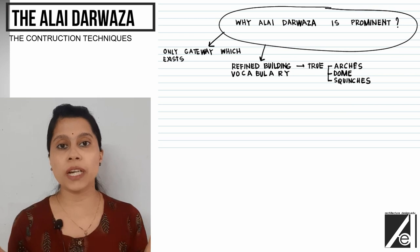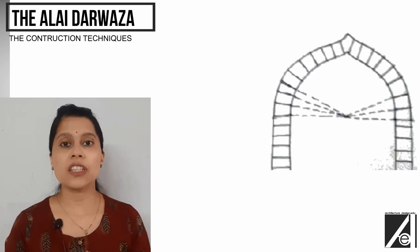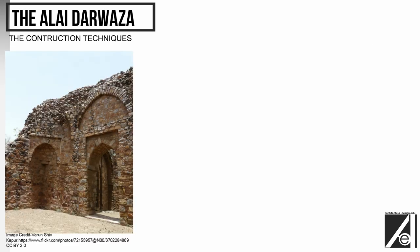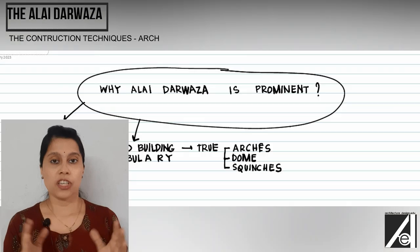A true arch is an arch with radiating voussoirs. The use of the true arch was first seen prominently in Balban's tomb, where the Islamic pointed arch could be seen for the first time using the true arch technique. This can be observed in a very refined manner in the Alai Darwaza.